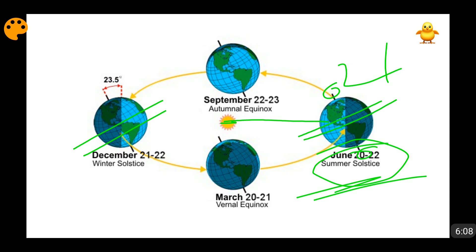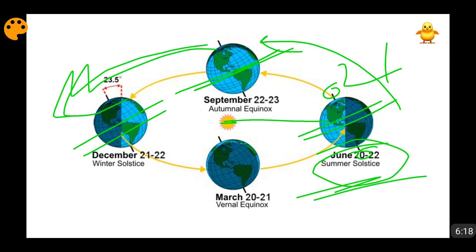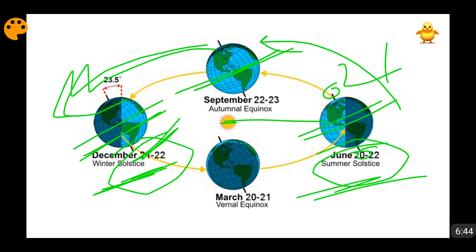When this apparent movement continues, the equator will come in between and obviously match with the center of the Sun, becoming equinox, and then it will move further. When the Earth reaches the next position, the Sun is above the Tropic of Capricorn, and the center of the Sun's plane is matching with the latitude of Tropic of Capricorn, with more sunlight present in the Southern Hemisphere.